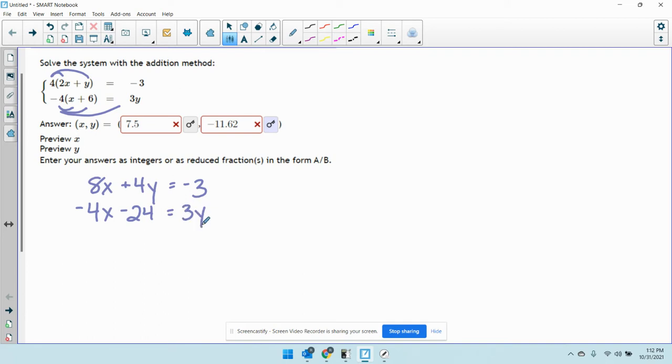So if you want to use the addition method, you got to start by getting all the x's and y's on the same side. So what I'm going to do with the second equation is I'm going to subtract 3y and add 24 to both sides. So when I do that, the second equation becomes negative 4x minus 3y equals 24. My x and y are on the same side. I'm just going to rewrite the top one.